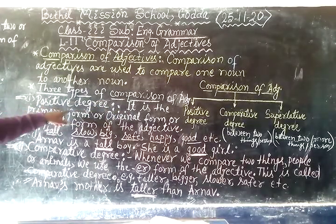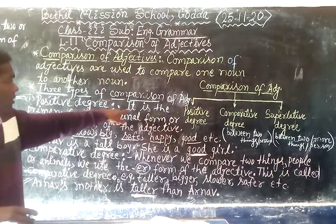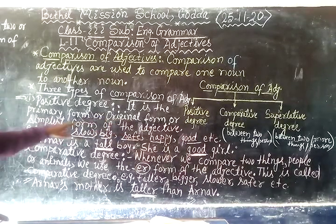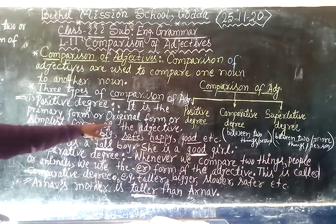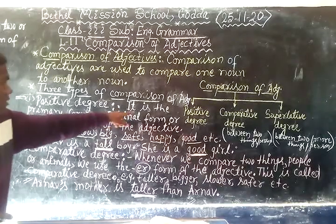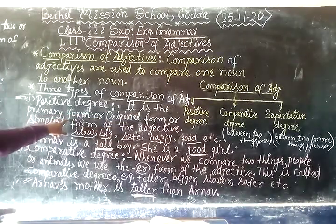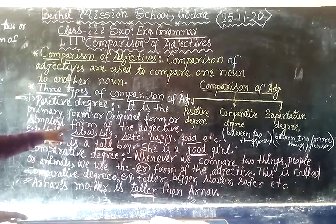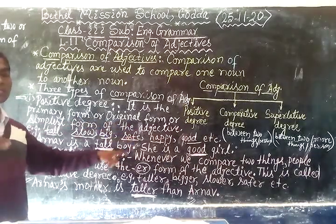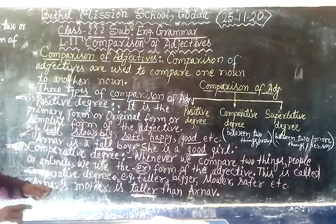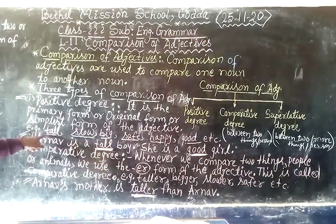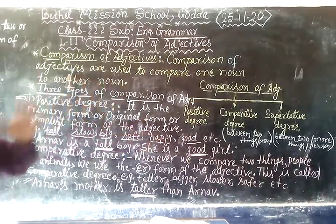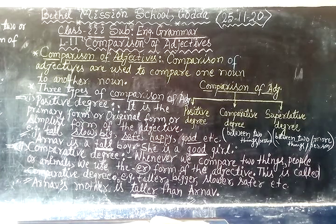Positive degree is the primary or original form of the adjective — it means it is the main adjective. For example: slow, big, safe, happy, group, and so on. There are many more examples.